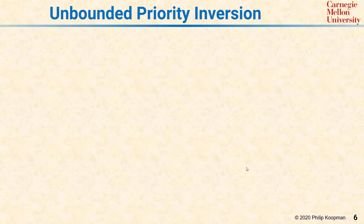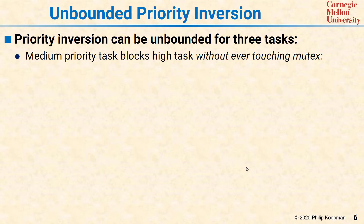The problem with the previous picture is that it missed an important special case that has actually been a problem on real systems. If you have not two tasks, but three tasks, you can get unbounded priority inversion. That means the high priority task might have to wait an extremely long time to complete, because the low priority task has the mutex.